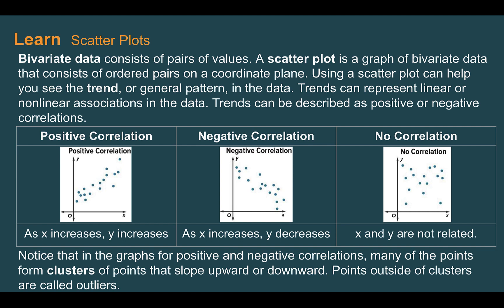There are going to be three types. First, we can have a positive correlation, where as your x value increases, so does your y value, making the graph go upward in its trend. We can have a negative correlation, where as x increases, y decreases, making it go downward in its trend. And we can have no correlation, where as x increases, you're not really sure if y is going up or down, so they're not really related.